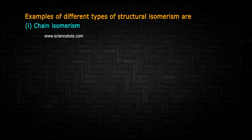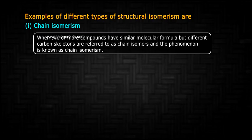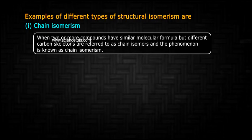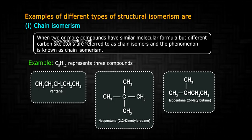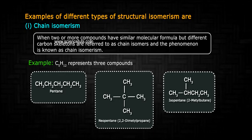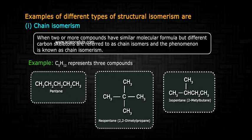1. Chain isomerism: when two or more compounds have the same molecular formula but different carbon skeletons, they are referred to as chain isomers, and the phenomenon is known as chain isomerism. Example: C5H12 represents three compounds.